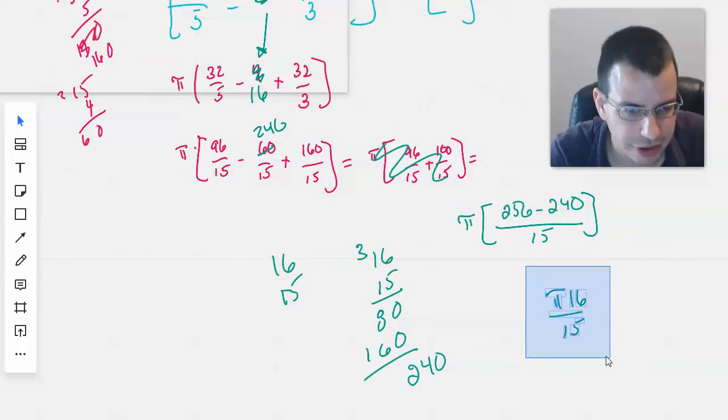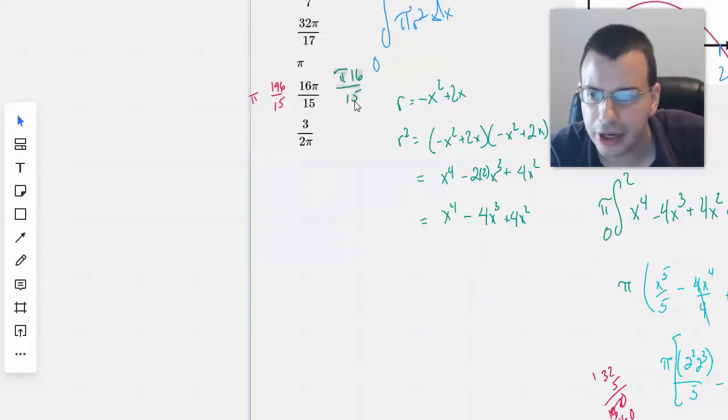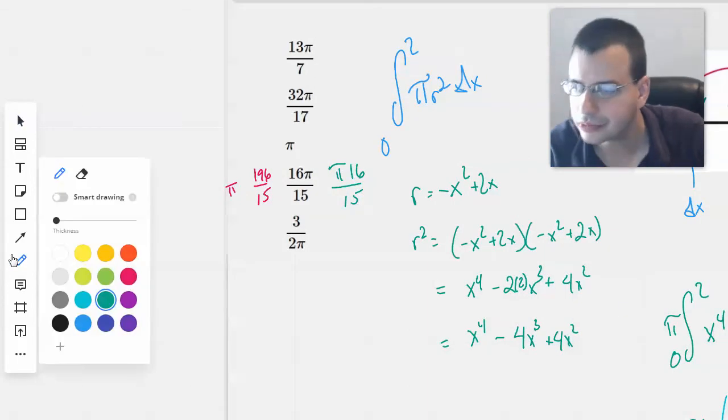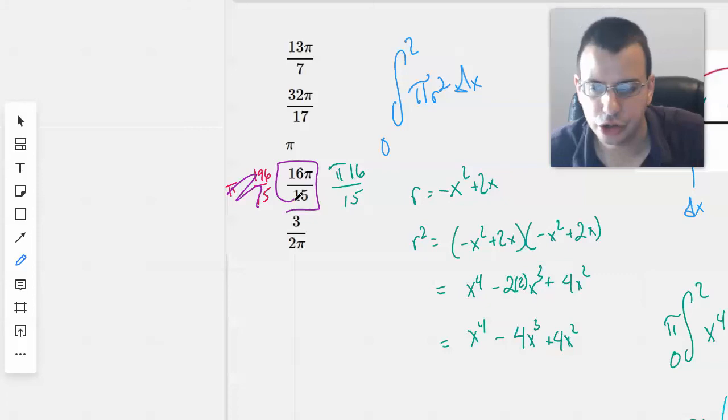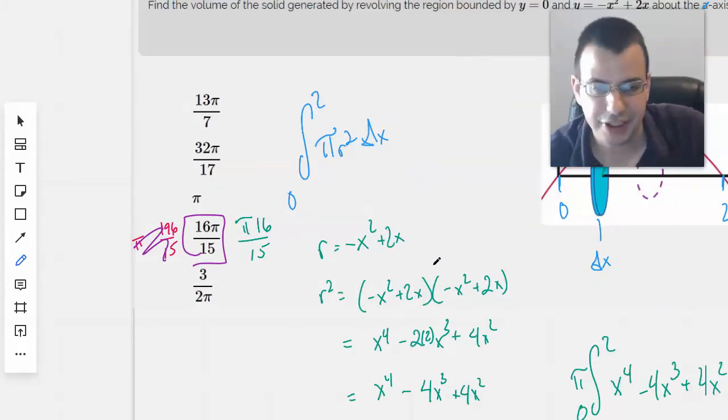Let's see how this compares. Whoop. There we go. That's what we were looking for. Darn you algebra. Darn you algebra. All right. So, 16 pi over 15 is the answer.